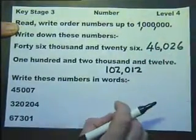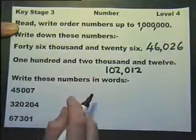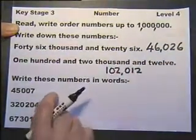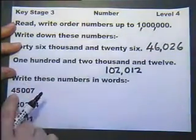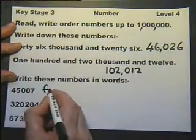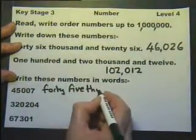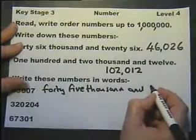But by habit I tend to put the comma in. So we're meant to be able to read a number and write it using digits. Also if it's in digits, write it in words. So this is forty-five thousand, forty-five thousand, and seven.